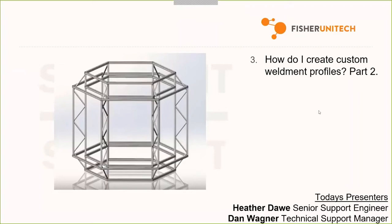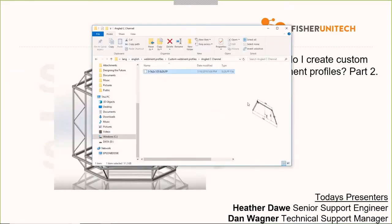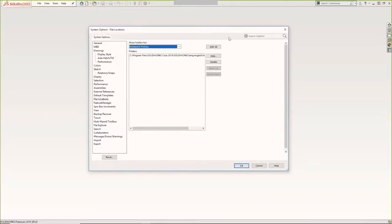Now we're going to cover how to create custom weldment profiles — part two. In part one we talked about how to get new weldment profiles, and we created a custom one: an angled C-channel, but only one size — a three-by-five-by-two. What if you need these in lots of different sizes and configurations without having to remake it every time? We're going to learn how to do that in SolidWorks using configurations.